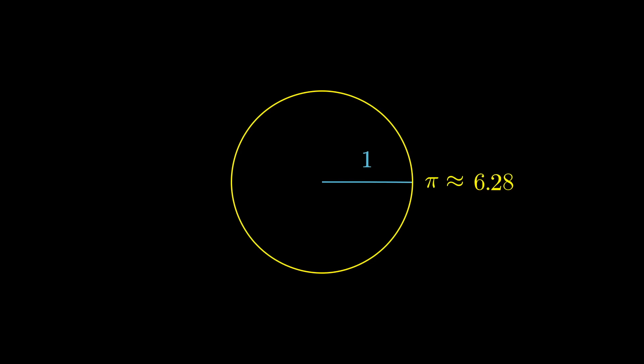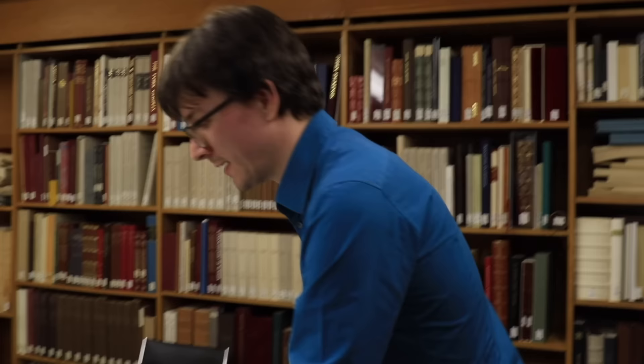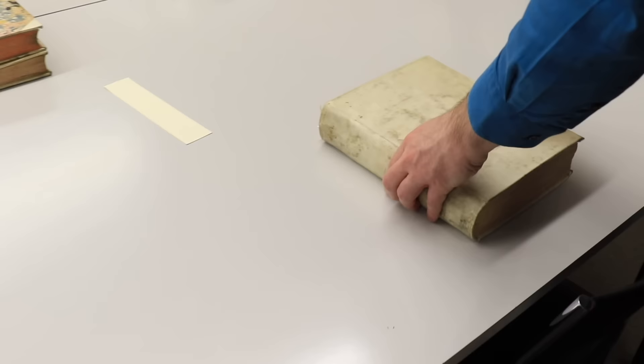Likewise, Euler let pi represent whatever circle constant best suited the problem before him. Though it's worth pointing out that he typically framed things in terms of unit circles with radius 1, so the 3.1415 constant would almost always have been thought of as the ratio of a circle's semi-circumference to its radius, none of this circumference to its diameter nonsense.